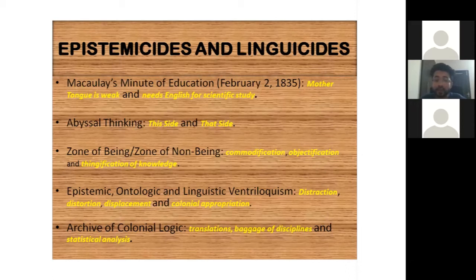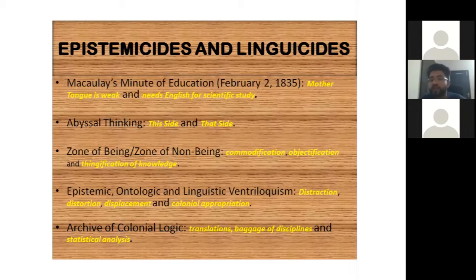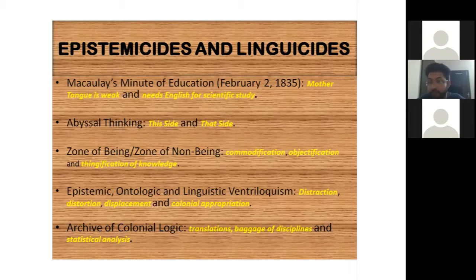Then there is the archive of colonial logic. If you see how Western knowledges were produced, indigenous knowledges from various non-Western parts of the world — including India — were trafficked to the West, distorted there, colonially processed, and then brought back to India and imposed upon the natives. They came up with an entire package: libraries, academic curriculum, institutional ideologies, political ideologies, and various other perspectives. They generated an archive of colonial logic, so that even when they physically don't exist, their ideologies, perspectives, practices, and thinking patterns remain active among the ex-colonies. That baggage of discipline is still what we are continuing with.